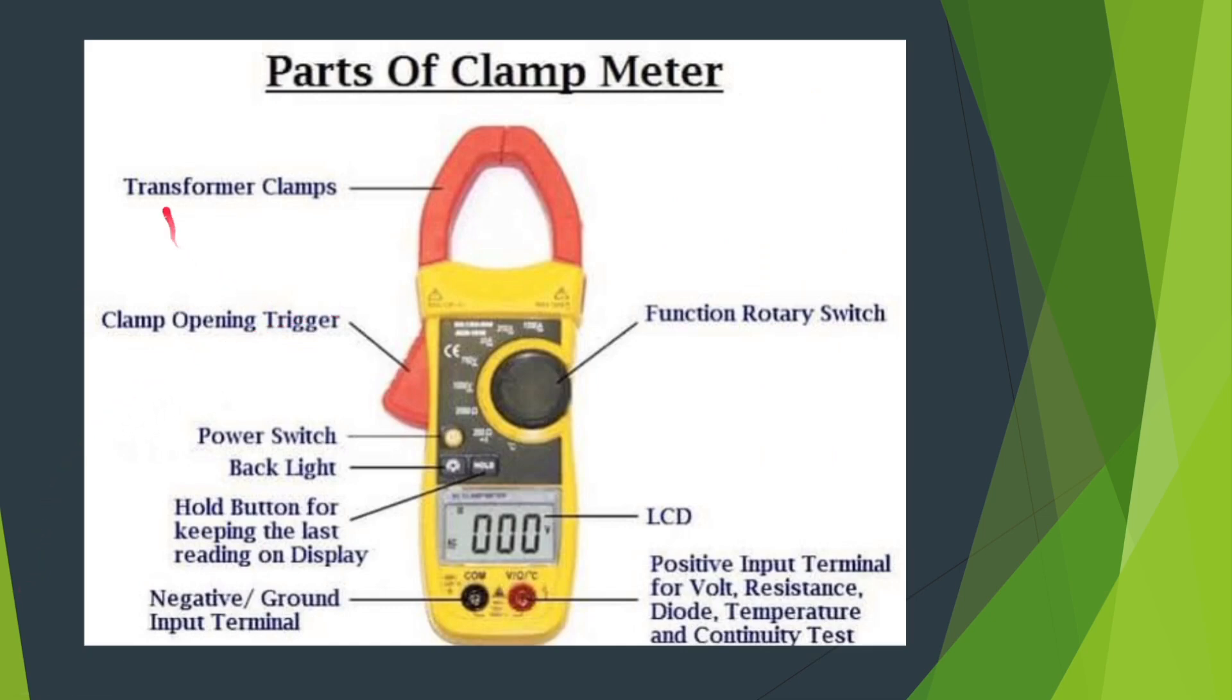Parts of clamp meter: The transformer clamps are placed around the wire whose current you have to measure. Clamp opening trigger is used to open and close the jaws. The power switch is the button used for switching the clamp meter on and off. Backlight button illuminates the LCD when pressed to allow the display to be read in the dark. Hold button holds the displayed value when pressed. The negative input terminal is where the grounding jack of the meter cable is joined, and the input positive terminal is where the positive jack of the meter cable is joined.